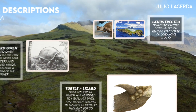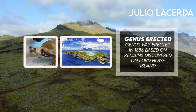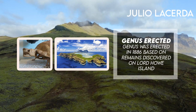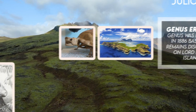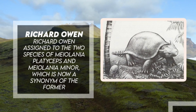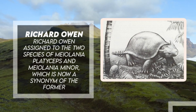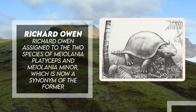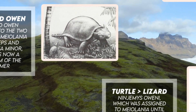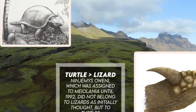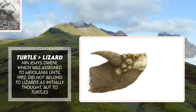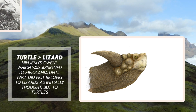The genus was erected in 1886, based on remains discovered on Lord Howe Island, which Richard Owen assigned to two species: Myolania platyceps and Myolania minor, which is now a synonym of the former. These were the first good myelanid remains, and were used to show that the first known remains of a related animal — a species from Queensland, now known as Ninjemys owenii, which was assigned to Myolania until 1992 — did not belong to lizards as initially thought, but to turtles.